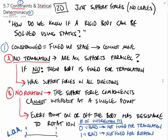The next criterion is no rotation. The test for no rotation is if the support force components do not all intersect at a single point. A single point is bad; multiple points is good. You want to find that every point on or off the body has resistance to rotation.